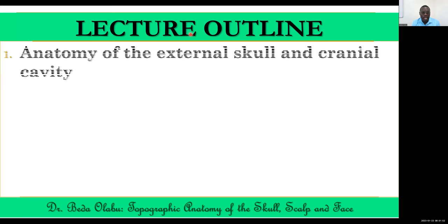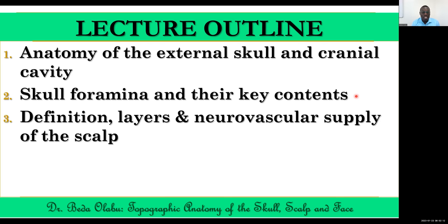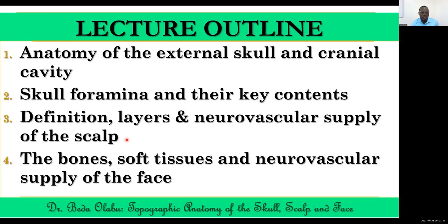Specific things you're going to learn are the following. We'll take some time to look at the external anatomy of the skull, the anatomy of the cranial cavity, and the various foramina of the skull and what they contain. Then we'll focus on the scalp — its definition, layers, and neurovascular supply — with clinical importance. Lastly, we look at the bones, tissues, and neurovascular structures of the face.